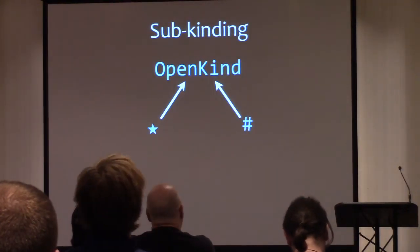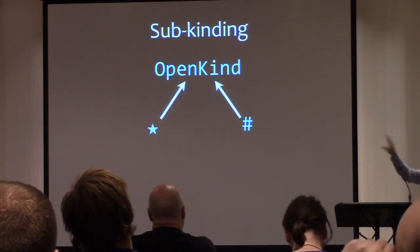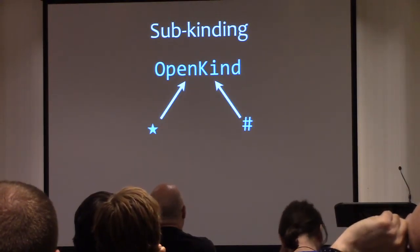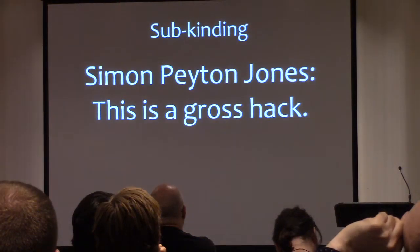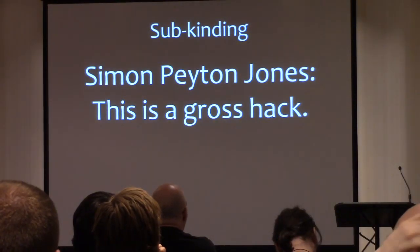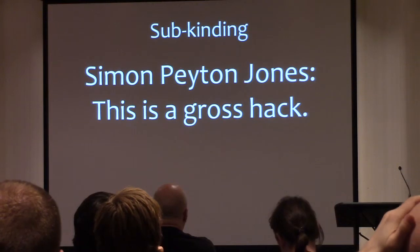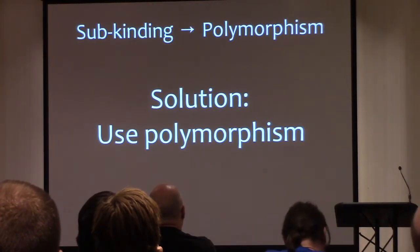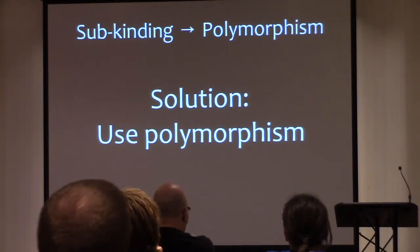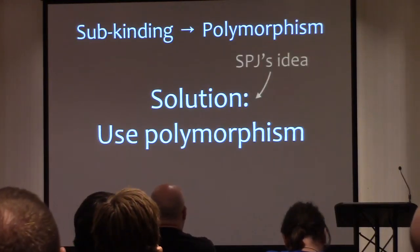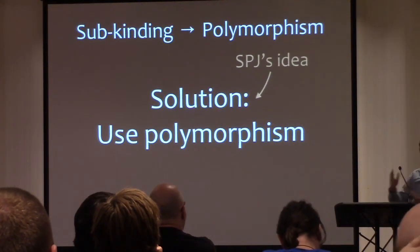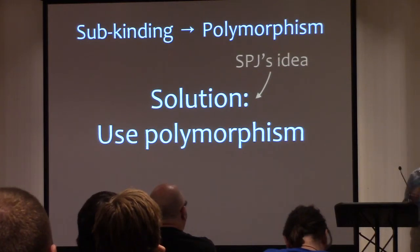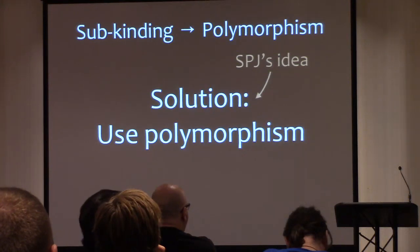So here's that subkinding lattice. There's really a little subkind function inside GHC that does this. And as we're discovering, this is a gross hack. Perhaps we should do something about it. The solution is: instead of using subkinding, we use polymorphism. Credit to Simon for this idea that I've implemented, and credit to Stephanie Weirich for the name levity.